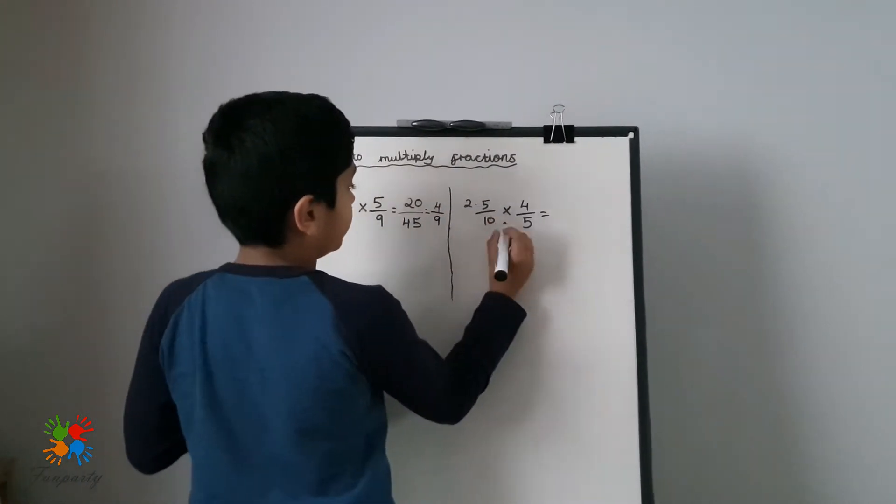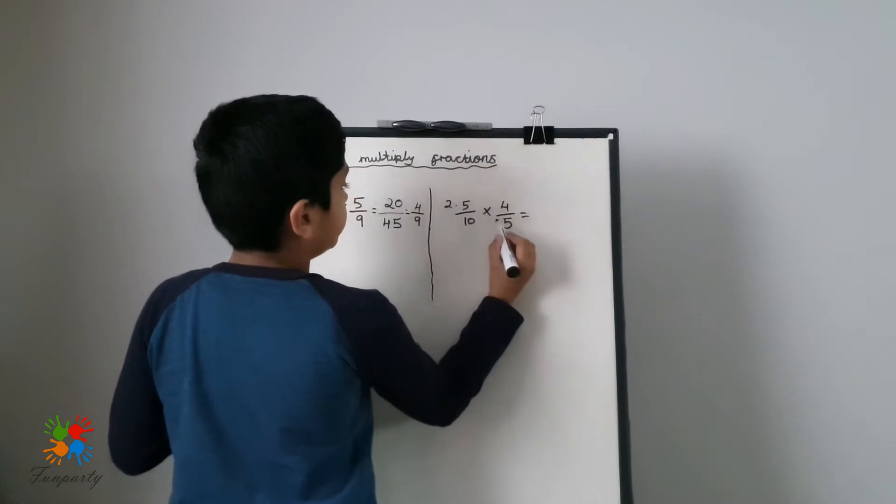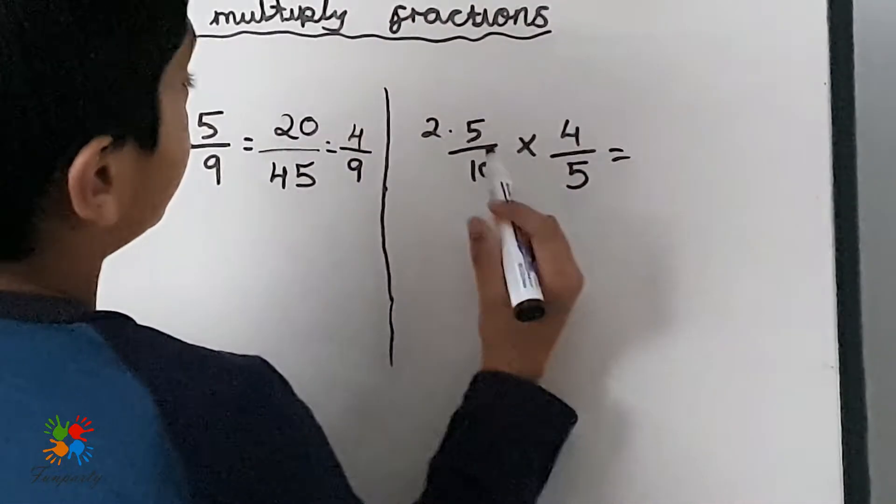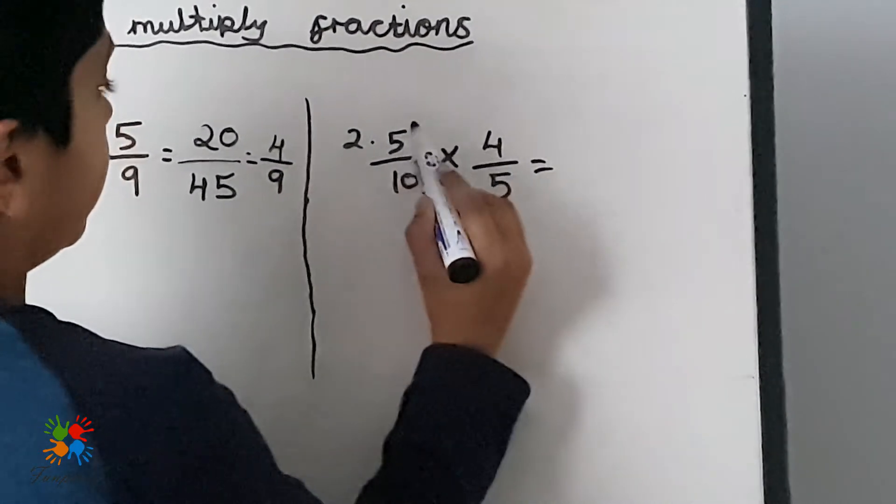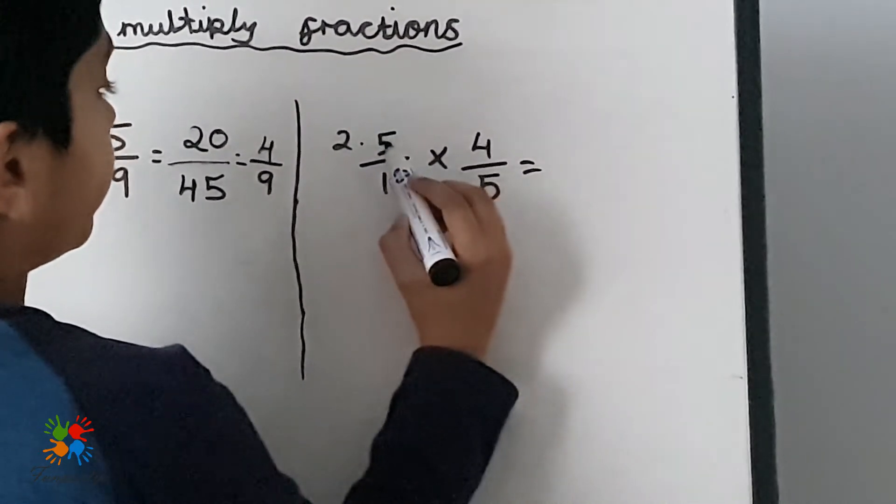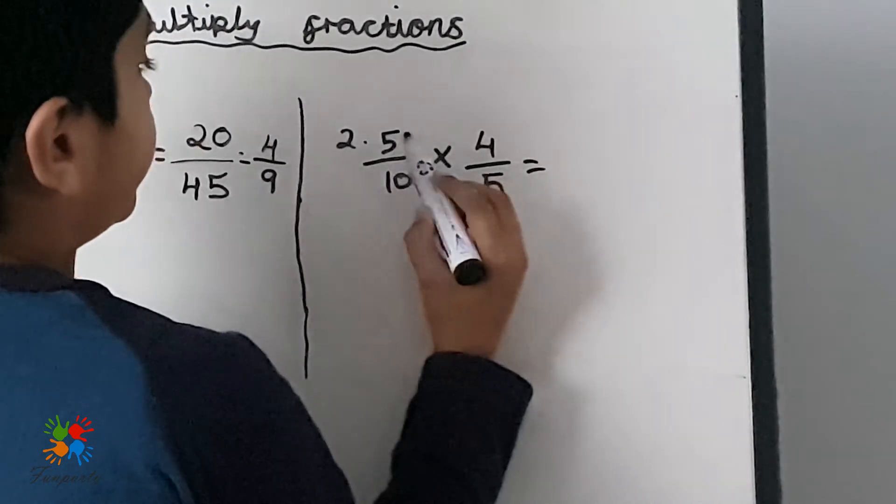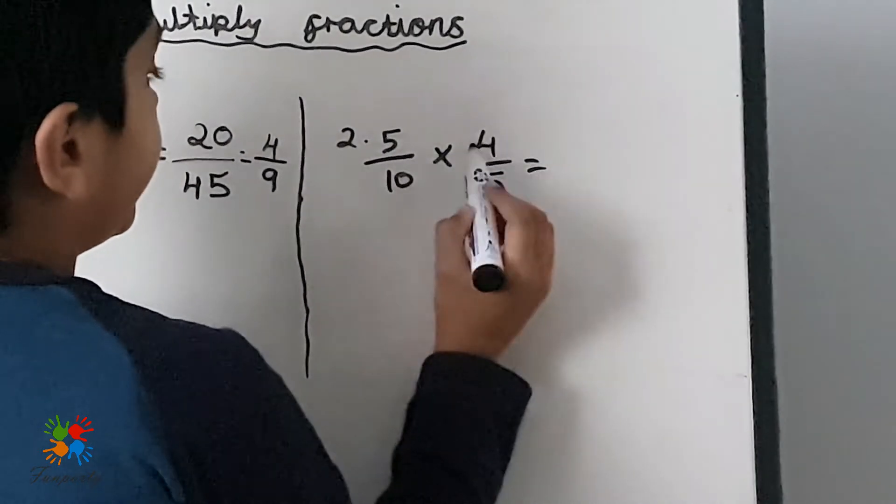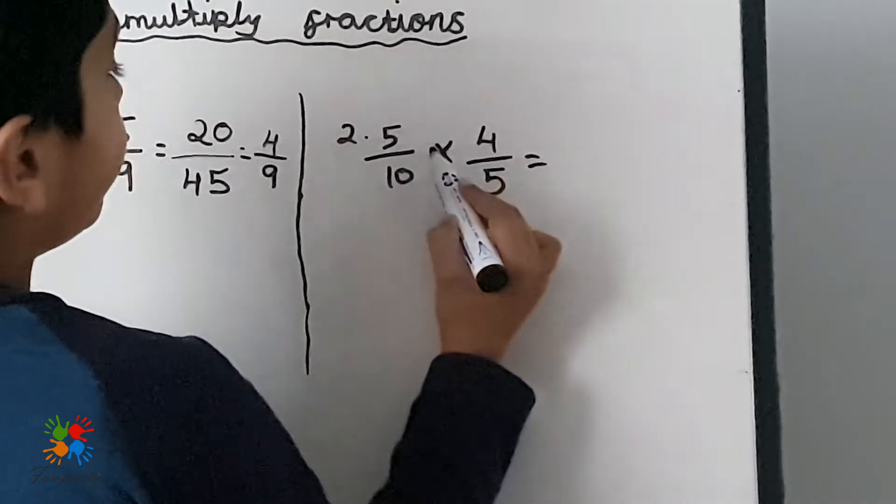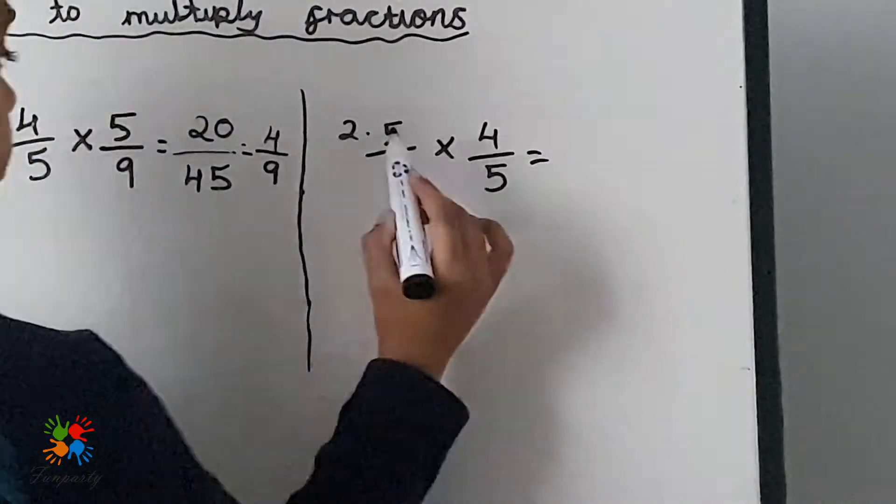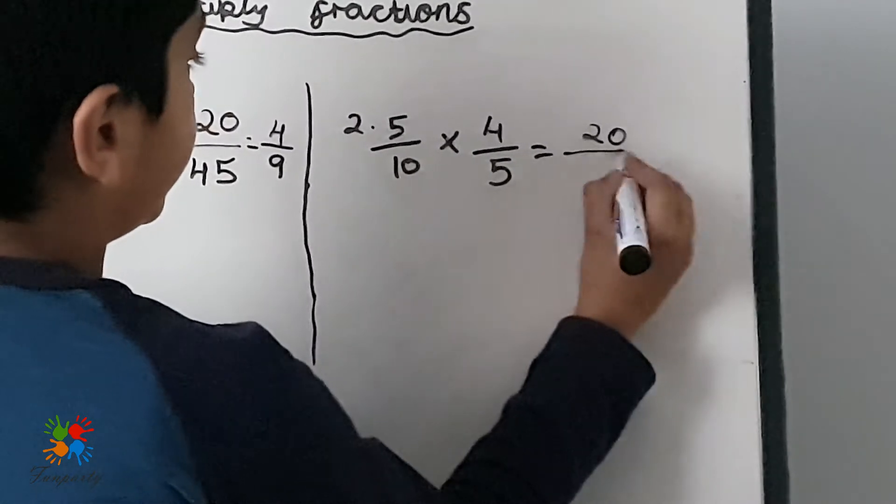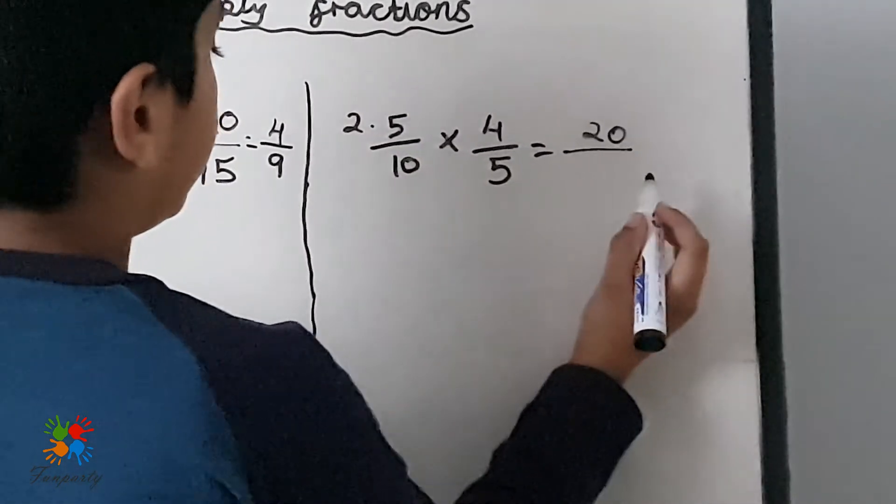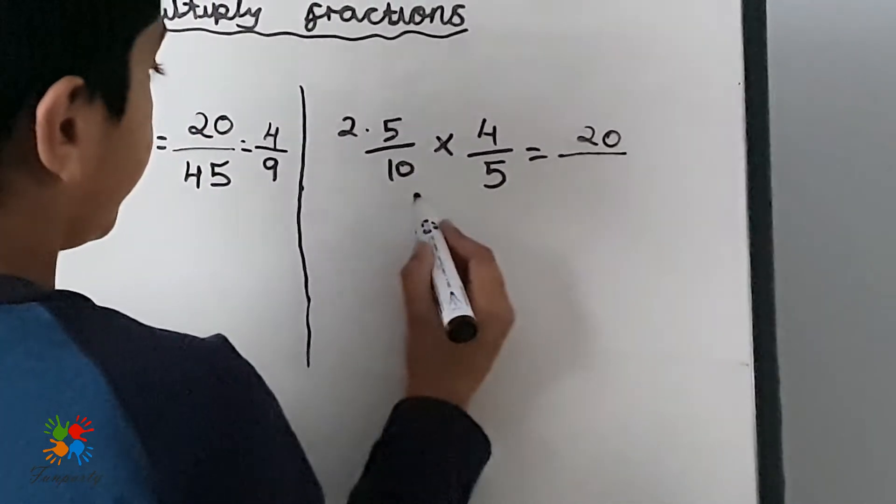And for question number two: 5/10 times 4/5. To answer this question, let's look at the numerator. In the numerator of both fractions you see 5 and 4. If you times those together, what do you get? 5 times 4 equals 20. So add 20 in the numerator, put your fraction bar, then look under the denominator.